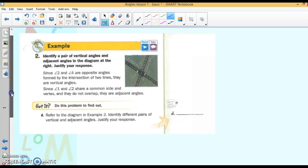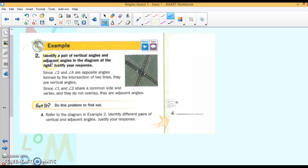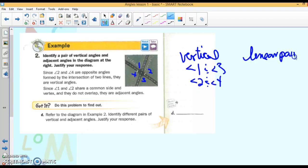Identify a pair of vertical angles and adjacent angles in the diagram. This is angle one, two, three, four. So, vertical will be angle one and angle three and angle two and angle four. Linear pairs - in this case, they're calling them adjacent and I believe they are adjacent, they're next to each other, but they're also linear pairs - would be angle one and angle two, angle two and angle three, angle three and angle four and angle four and angle one. All linear pairs or adjacent.